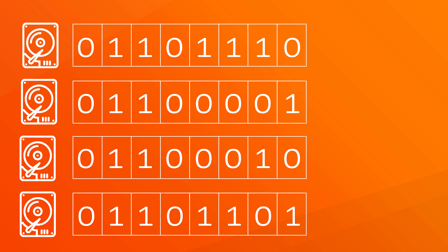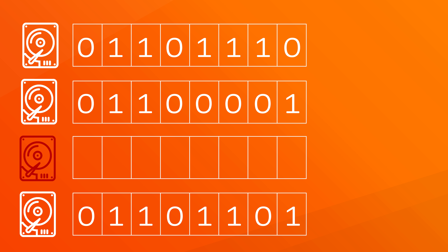Now, let's imagine we lose disk 2. Unraid is now able to calculate what should have been in disk 2 by reading all other values from the disk and then checking it with parity. If the number is even, then the missing disk had a 0 at that location. If the number is odd, then the missing disk had a 1 at that location.